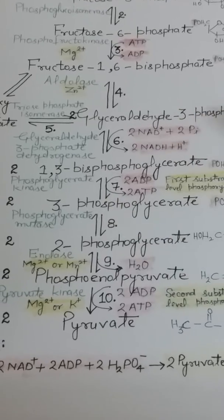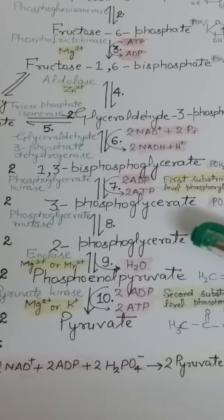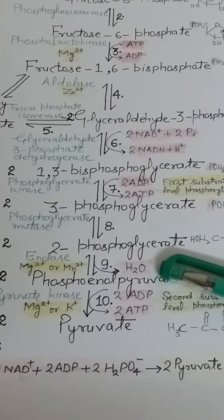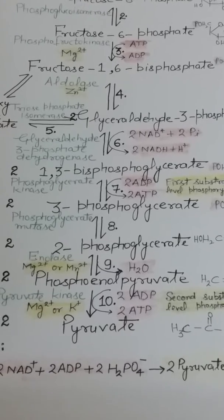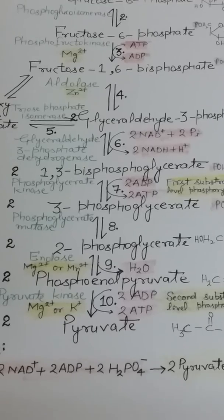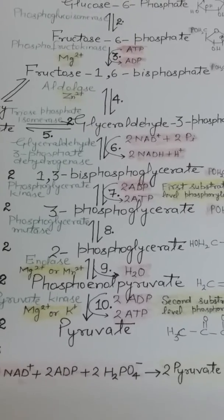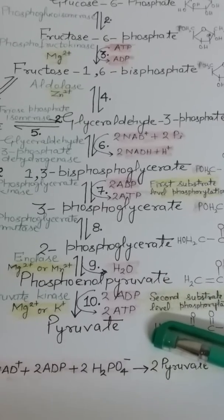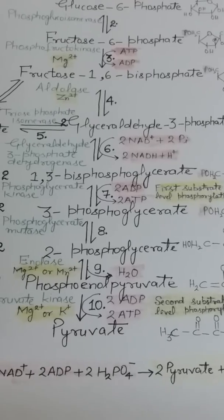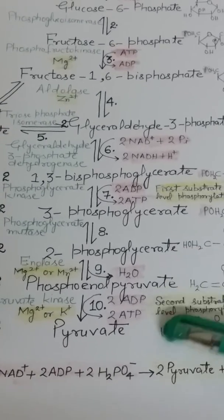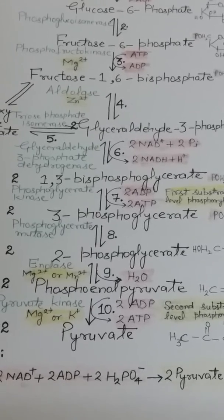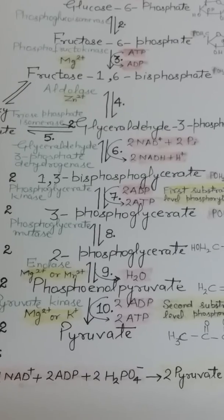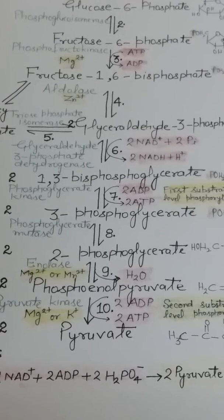In step 8, 3-phosphoglycerate is converted into 2-phosphoglycerate with the help of enzyme phosphoglycerate mutase. In step 9, 2-phosphoglycerate is converted into phosphoenolpyruvate and water is removed; this step is catalyzed by enolase, which requires either magnesium ions or manganese ions. In step 10, phosphoenolpyruvate is converted into pyruvate — this irreversible transfer of the phosphoryl group from phosphoenolpyruvate to ADP is catalyzed by pyruvate kinase, which requires either magnesium ions or potassium ions.